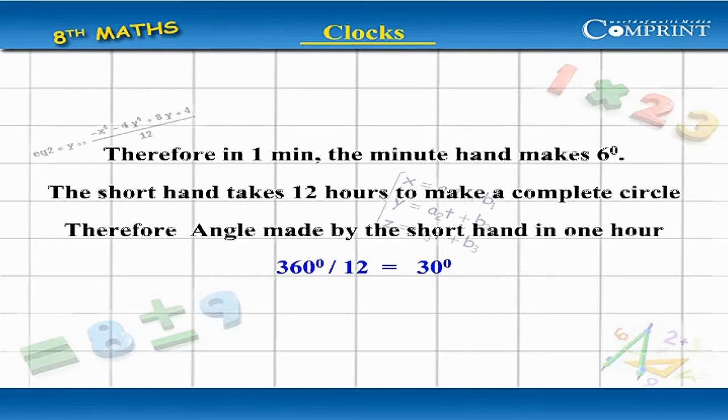The short hand takes 12 hours to make a complete circle. Therefore, the angle made by the short hand in one hour equals 360 degrees divided by 12, equal to 30 degrees.